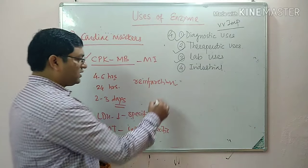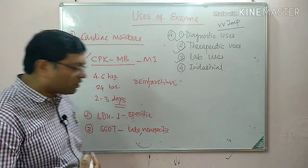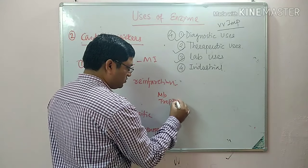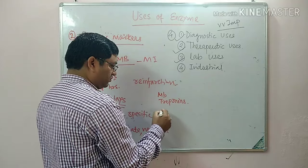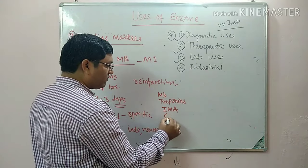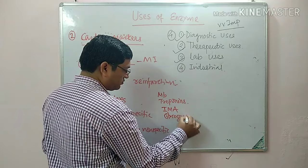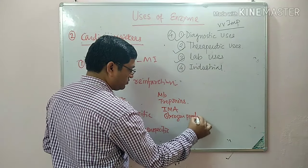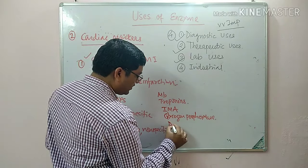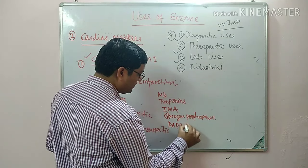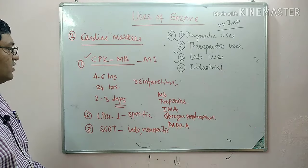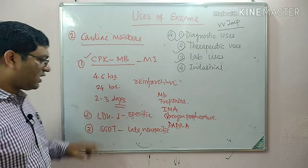Other cardiac markers include myoglobin and troponins (troponin T and troponin I). Newer markers include ischemia-modified albumin, glycogen phosphorylase BB isoenzyme, and pregnancy-associated plasma protein A, which is also a marker for myocardial infarction. The enzymatic markers are CPK-MB, LDH1, and SGOT.